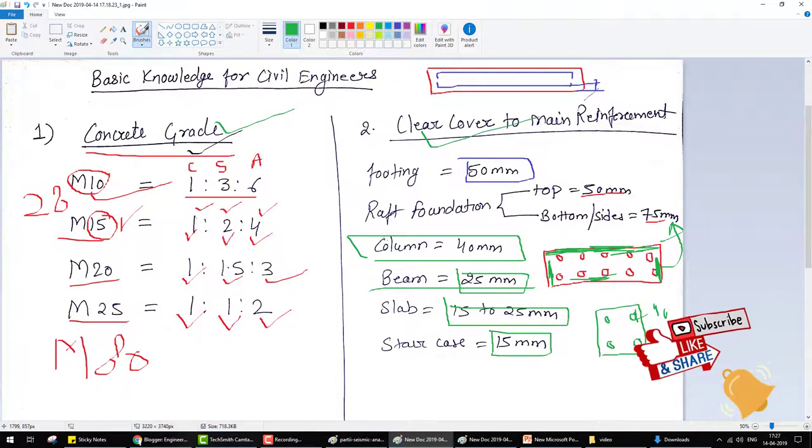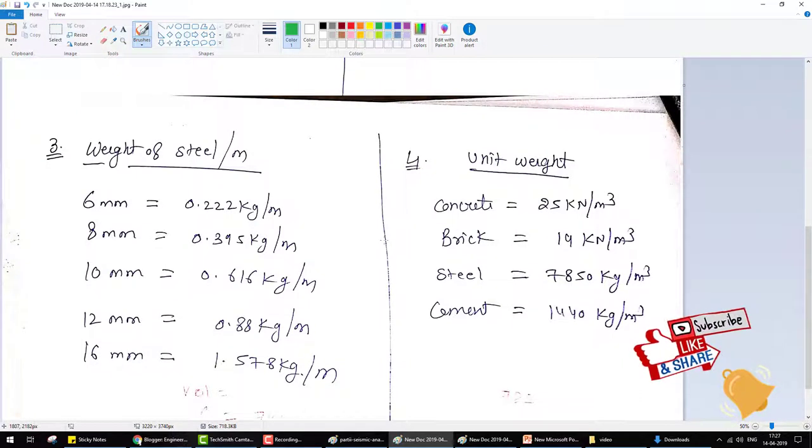So this is all about clear cover and concrete grades. The next topic is the weight of steel per meter. Please focus on this: per meter. It means if you have 1 meter bar, 1 meter length reinforcement bar, what is the weight of this bar for different diameters?